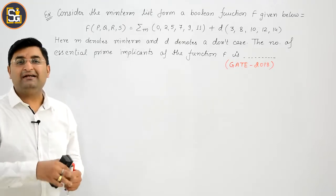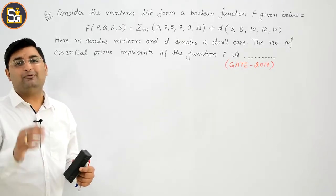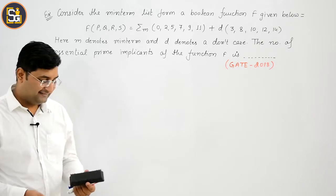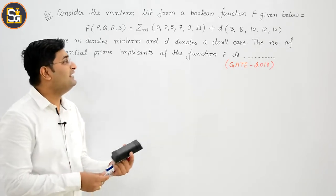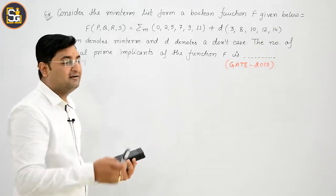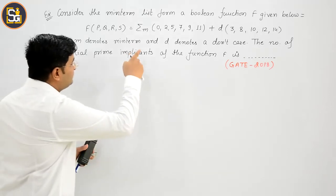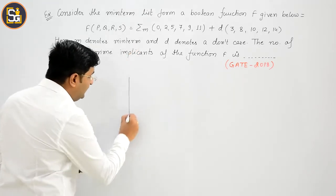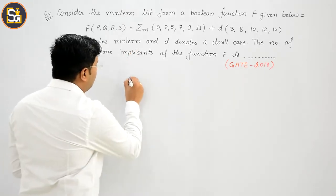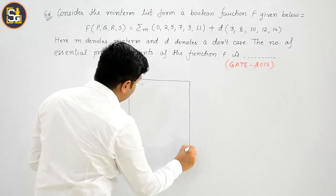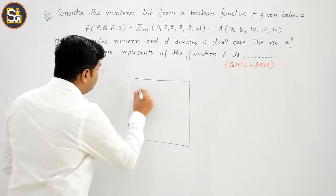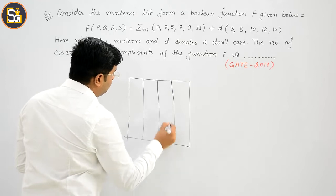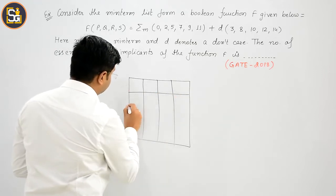Until now, all the questions we have done were given in a K-map. Now, as you have studied, we will build the K-map accordingly, and then we will do the mapping to find which ones are essential prime implicants.